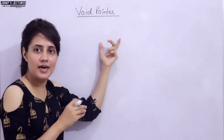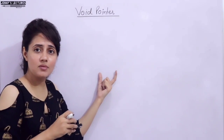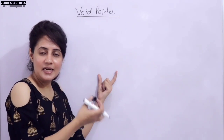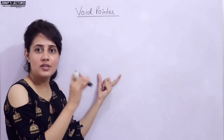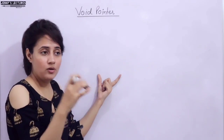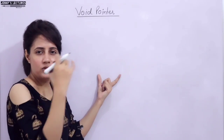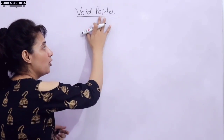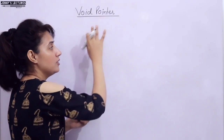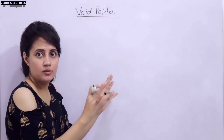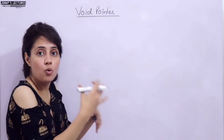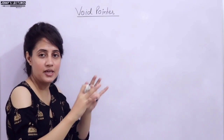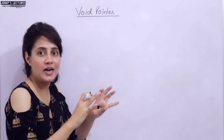In simple terms, take the same example: an empty glass — you can fill that glass with either water, milk, or some other drink or anything. Same here — this pointer is having no associated data type. So you can convert this pointer into any other pointer also. Whatever I am saying, let's understand the meaning of that.